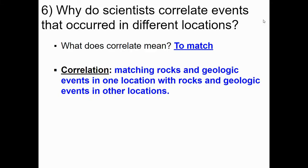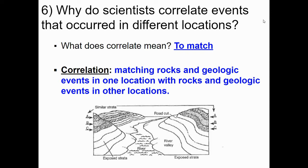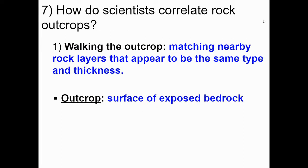We actually use this correlation when we study Earth's past. So let's take a closer look at what it actually means to correlate in regards to geologic history. Correlation means to match, and when we're speaking in geologic terms we're matching rocks and geologic events in one location with rocks and geologic events in another location. Section A on the right side is the same rock as section A on the left side even though they aren't connected.